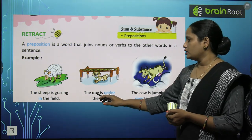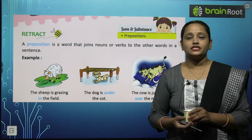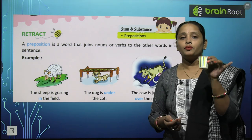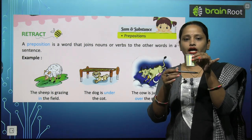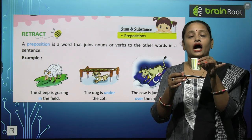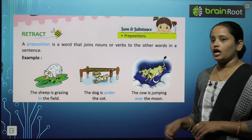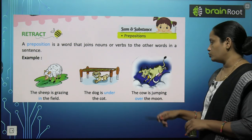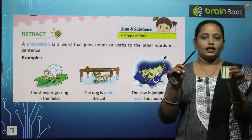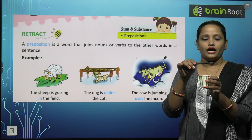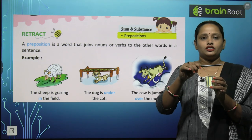Next, the dog is under the cot. 'Under' means kisi cheez ke neeche. For example, ye cup hai aur ye pen hai — pen cup ke neeche hai, means under the cup. Similarly, the cow is jumping over the moon — 'over' means upar. Yahan pen cup ke upar hai — over the cup. Over means upar.